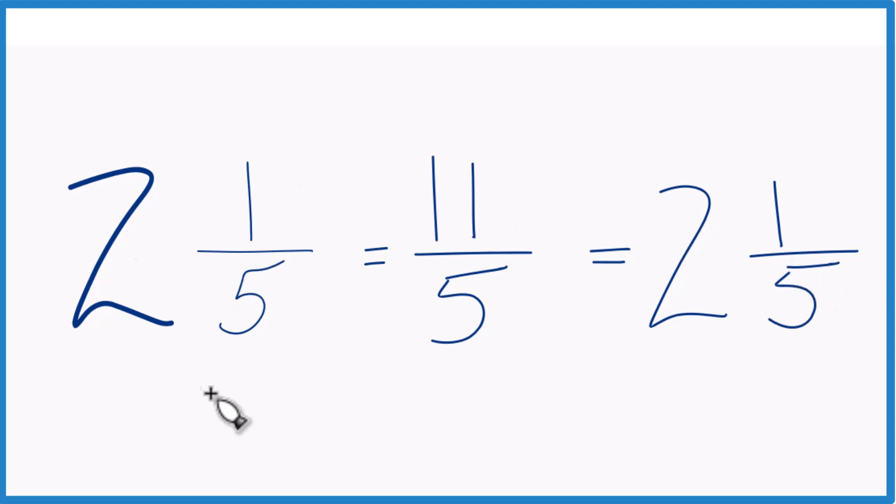That's what we started out with. So in answer to our question, 2 and 1 fifth equals the mixed number 11 fifths.